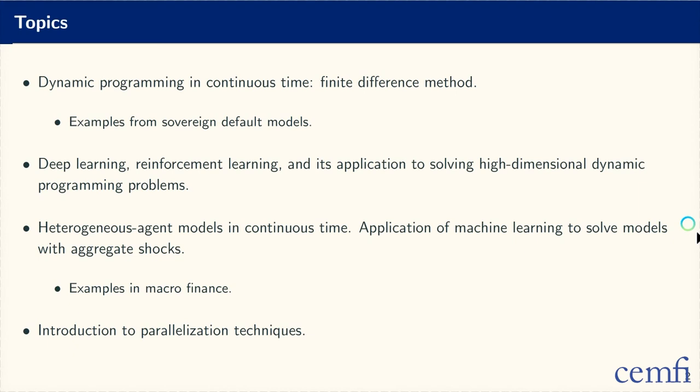We will learn what a neural network is, why neural networks are good approximators to a very large class of problems, and we will illustrate how to apply them in real life. Then, with this background, we will move to models with heterogeneous agents in continuous time, with examples from macrofinance on how to use the machine learning techniques described before to solve these models. Finally, we will wrap up this week with a brief introduction to parallelization techniques, highlighting the practical aspects more than the abstract theoretical aspects.